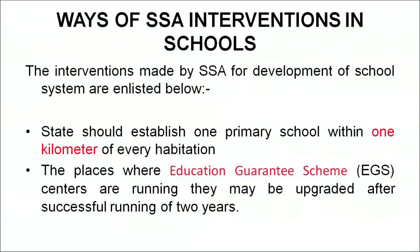Let us look into the ways of SSA intervention in schools — the different ways SSA makes its intervention. The interventions made by SSA for development of the school system can be listed as follows. First, the state should establish one primary school within 1 kilometer of every habitation. This was an important directive of SSA and has created a magnificent change in support of children coming from remote habitations.